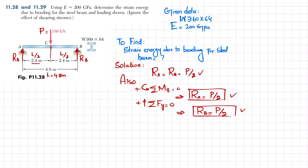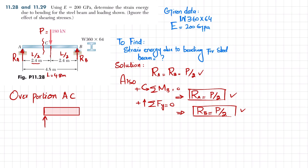So R_A equals R_B equals P/2. Now we move to finding the strain energy over portion AC. I cut the beam on portion AC; at point A we have R_A equal to P/2. Let the distance to the cut be x, where x varies from 0 to L/2.